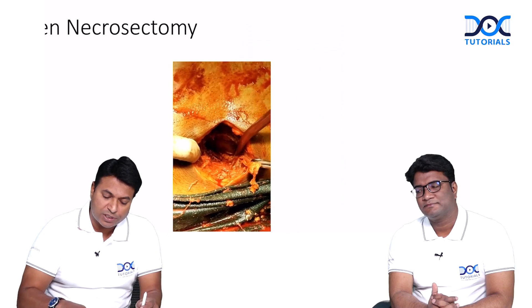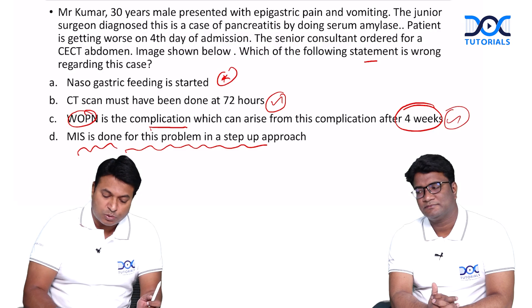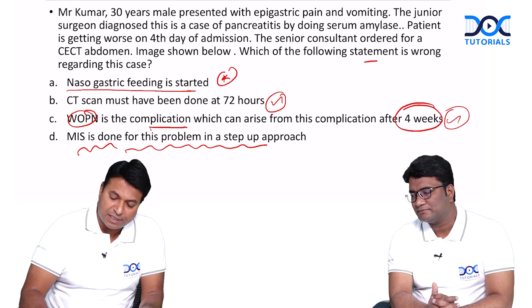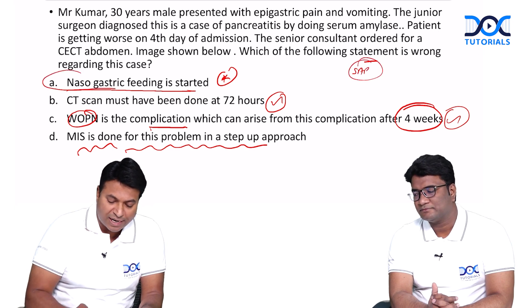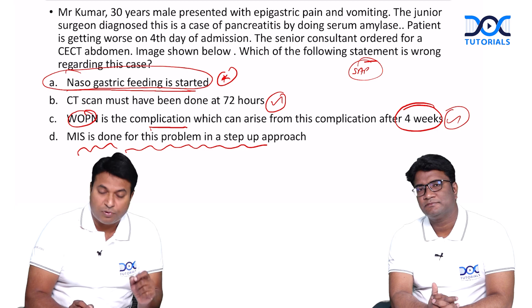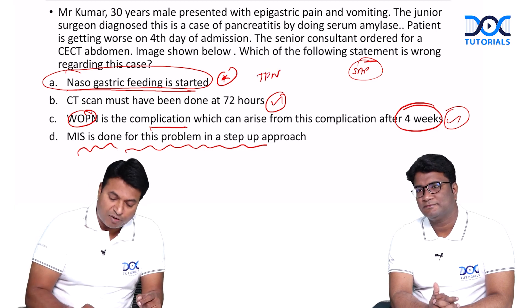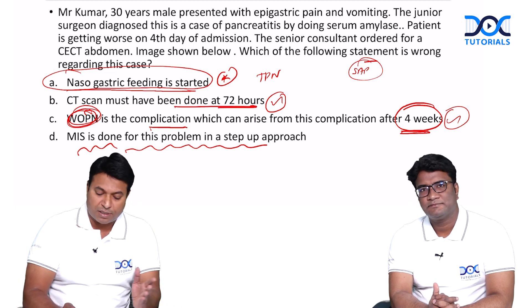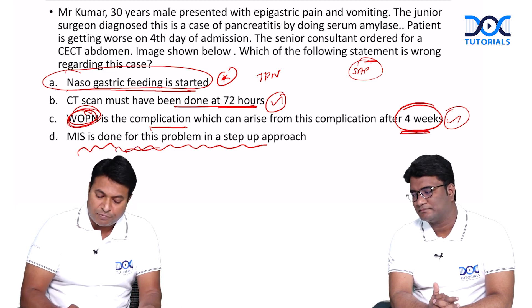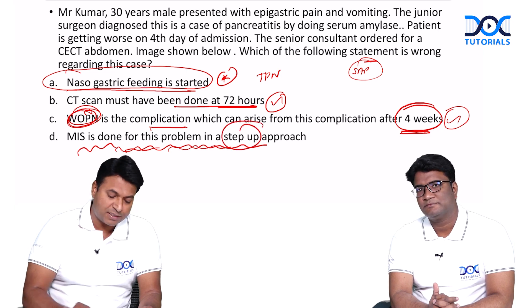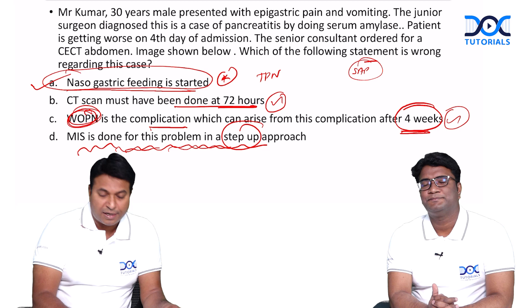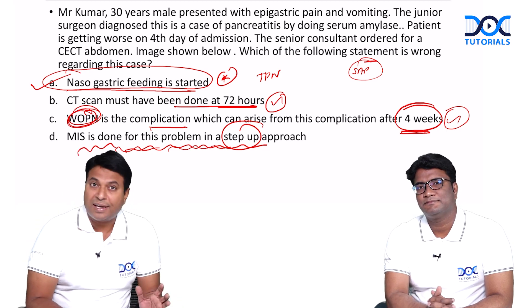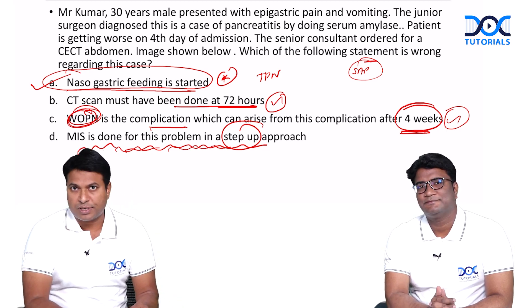From this question, you can conclude which is the wrong answer. It is a straightforward PG-level question. The answer is A: nasogastric feeding is started — this is wrong because this is a case of severe acute pancreatitis and we should not start nasogastric feeding; we should only go for TPN. Walled-off pancreatic necrosis seen after four weeks is correct. CT scan done at 72 hours or later is correct. MIS in a step-up approach is correct. So the answer is A. That completes the discussion of this integrated surgery and radiology question.